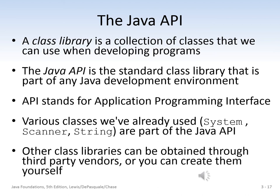Next we're going to talk about class libraries and the Java API. API stands for Application Program Interface. The Java API is the standard class library included in any Java development environment. A class library is a collection of classes that can be used when developing programs. Some classes we've already used that are part of the Java API include System, Scanner, and String. There are also other class libraries that can be obtained through third-party vendors, or you can create your own.